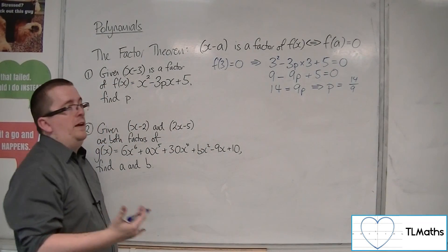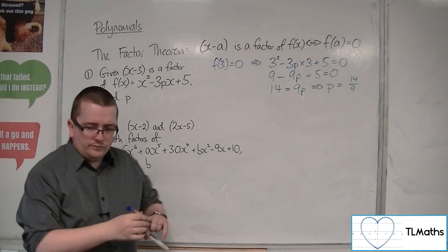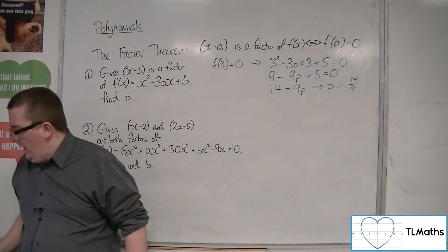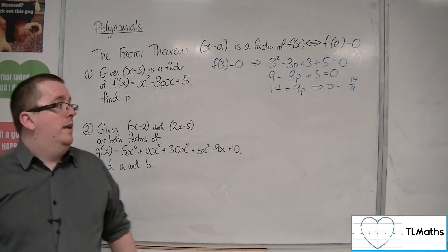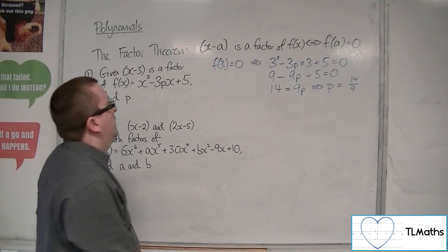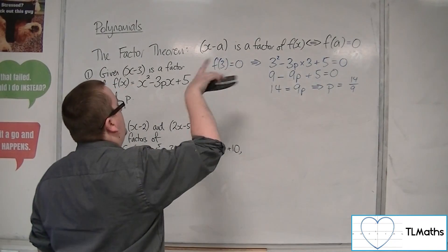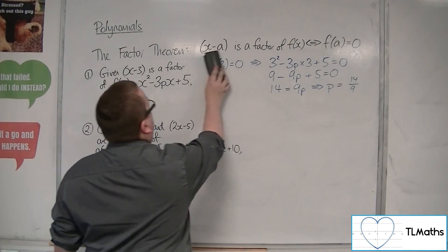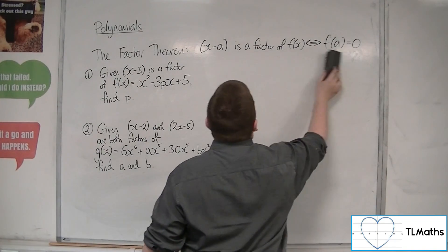And that's found p — that's how you would work with number 1. Knowing that when you substitute the value in you're going to get 0 is the way to access it.